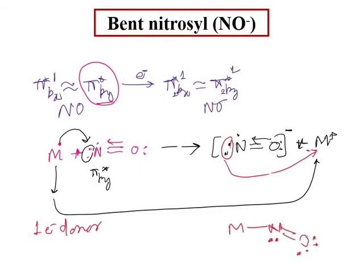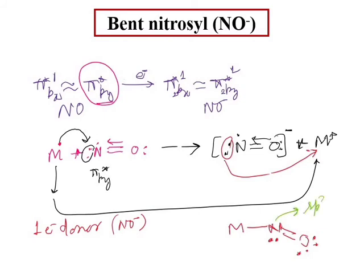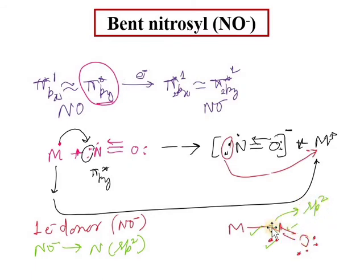NO minus is a one-electron donor. Looking at the nitrogen center, it is sp2 hybridized. With sp2 hybridization — one s, two p orbitals participate in hybridization — the nitrogen is sp2 hybridized, resulting in a bent form. So sp2 hybridization gives a bent geometry.